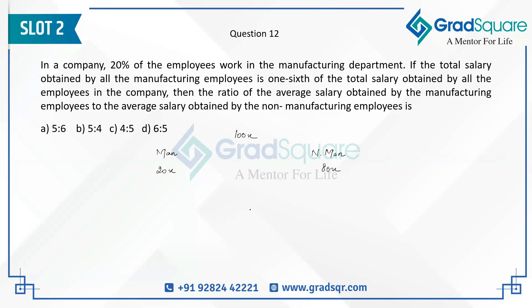The total salary obtained by all the manufacturing employees is one-sixth of the total salary. If the total salary is 6y, then one-sixth of 6y — which is y — is going to be obtained by manufacturing employees, and the remaining 5y is going to be obtained by the non-manufacturing employees.